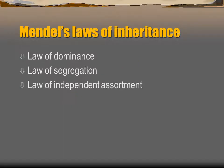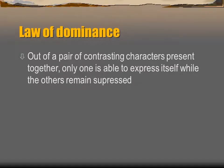Next, we discuss Mendel's Laws of Inheritance. Mendel had three laws. The first is the Law of Dominance: out of a pair of contrasting characters present together, only one is able to express itself while the other remains suppressed. This is the same concept as dominant and recessive alleles — the dominant allele expresses itself and the recessive allele cannot.